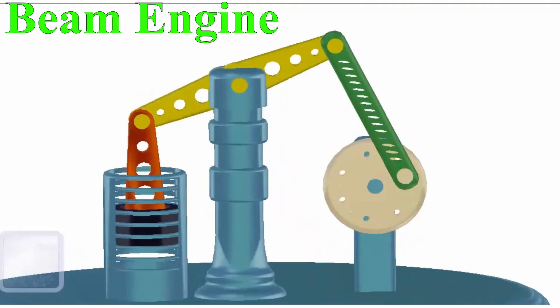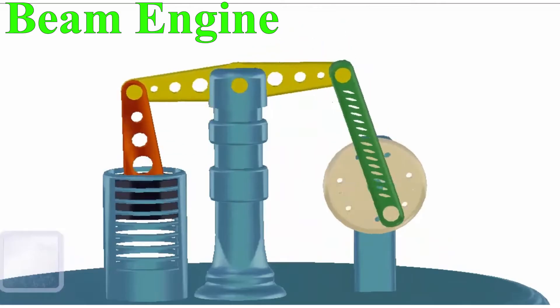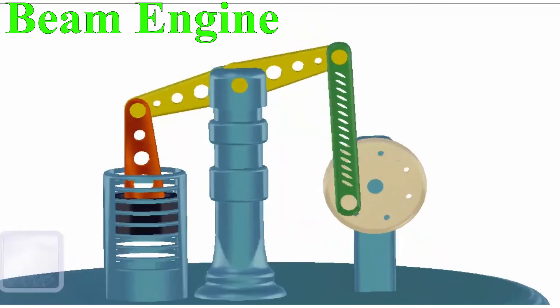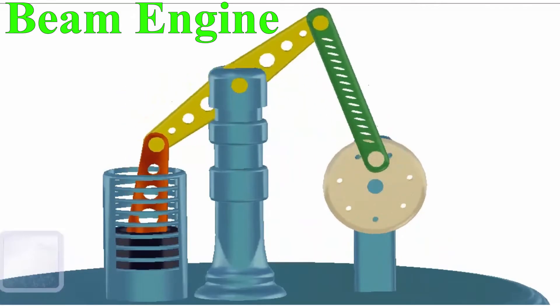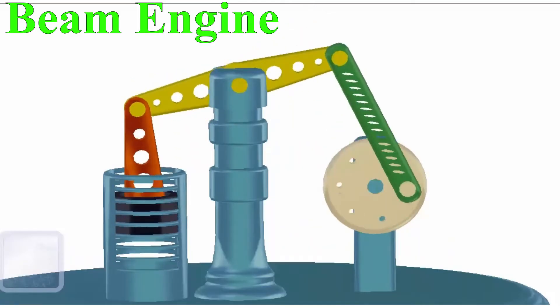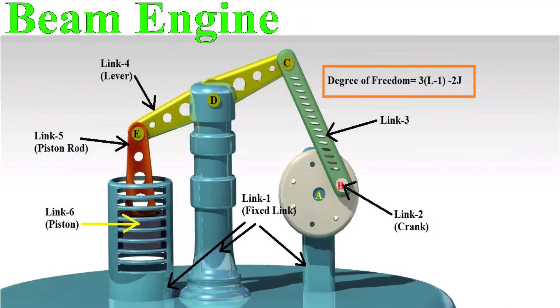Working Principle of Beam Engine: When the crank rotates about the fixed center, the lever oscillates about a fixed point. The end of the middle link is connected to the piston rod, which reciprocates due to the rotation of the crank.